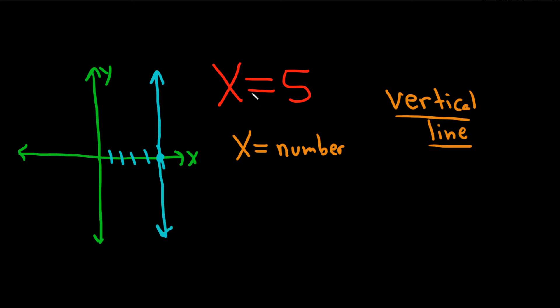And that's it. So whenever it's x equals a number, it's always a vertical line. You just go to the number and then draw a vertical line.